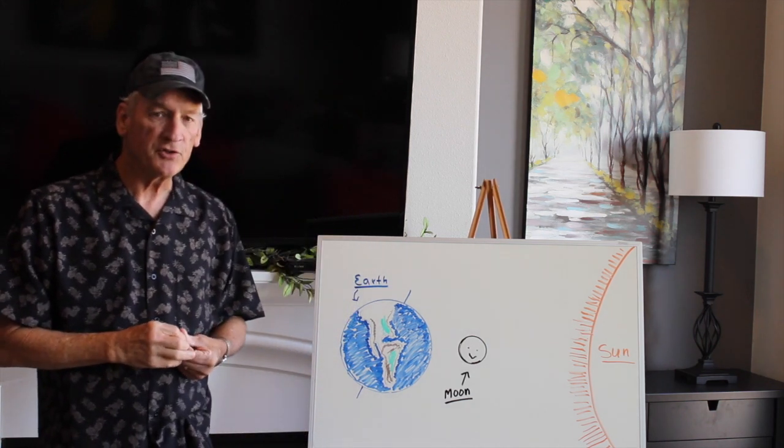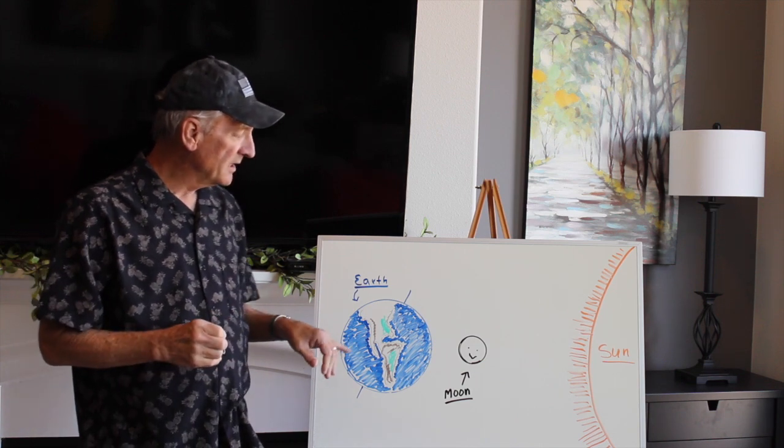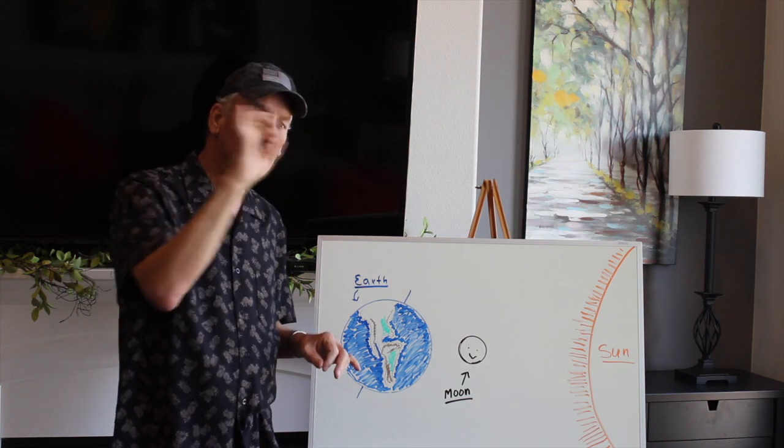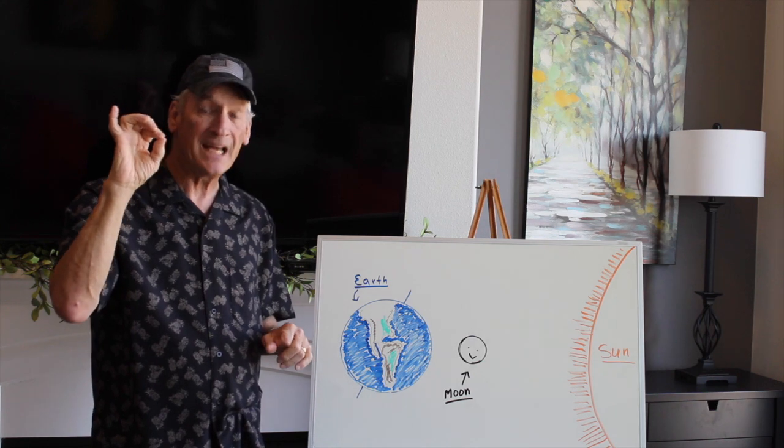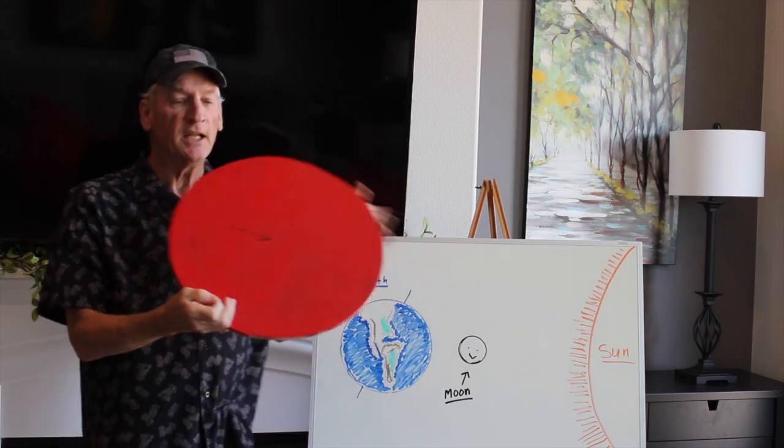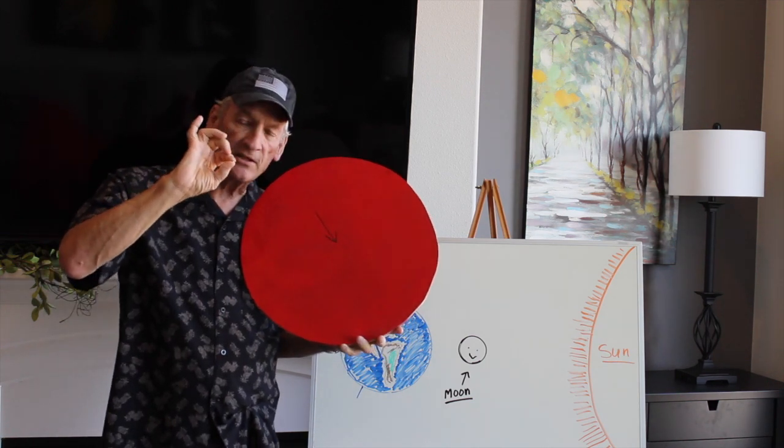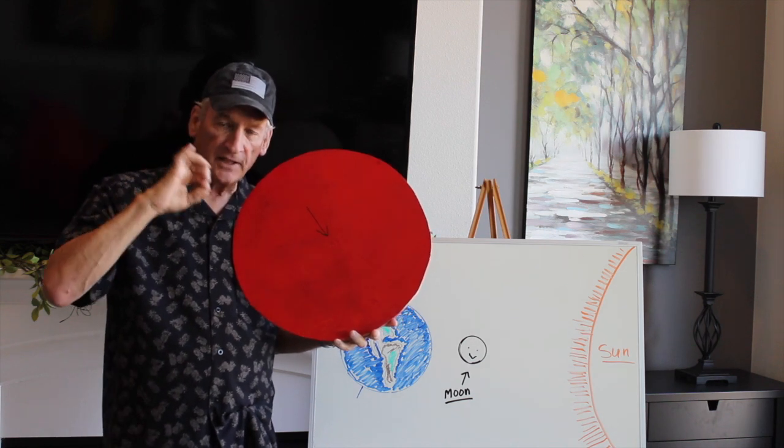Now another thing that's just amazing to me is that the earth - it would take 109 earths side by side. The diameter of the earth is 109 times the diameter of the sun. In other words, if the sun was this big, the earth would be the size of this BB. I will show you how I figured that out.